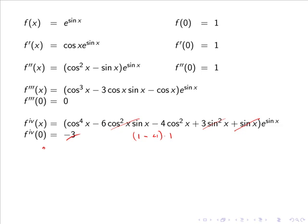So in the Maclaurin series f of x is given by f of 0 which we found to be 1 plus f dash of 0 so 1 over 1 factorial multiplied by x plus f double dash of 0 which we found to be 1